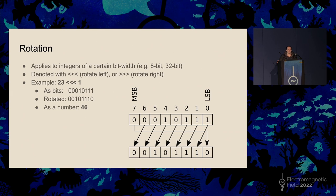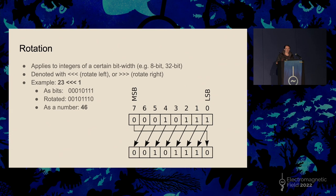The next of the three ARX operations is rotation. For rotation, you look at the bits of your number and shift all the bits one way or another. In this example, I'm shifting to the left by 1, so all the digits move to the left by 1, and the digit that would fall off the end comes back around to the start. So I had 23, rotated it to the left by 1, and the resulting bits equal 46 as a decimal.